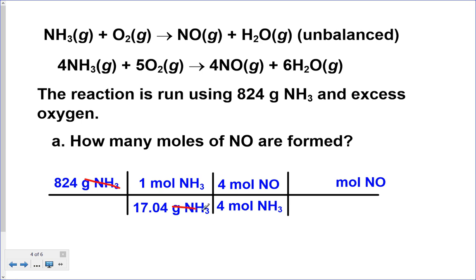The grams cancel, moles of NH3 cancel, and we end up with moles of NO. The conversion factor is four moles to four moles, so there's no extra arithmetic there. We do 824 divided by 17 and get 48.4 moles of NO. That's what they asked for, so we're done. If they had wanted grams of NO, we'd have to convert those moles to grams, but they didn't.